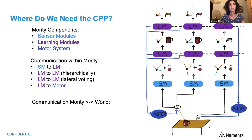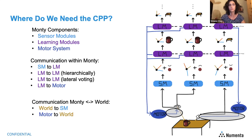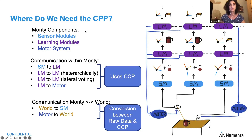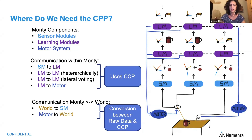And then finally, learning module to motor system. We also have communication between Monty and the world, which includes world to sensor module and motor system to world. Basically, we want all communication within Monty to use a common communication protocol. The sensor module's main job is to convert raw data into the CCP, and the motor system converts the CCP into motor commands like muscle movements or actuator commands.